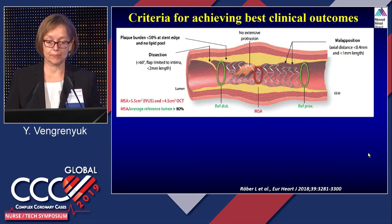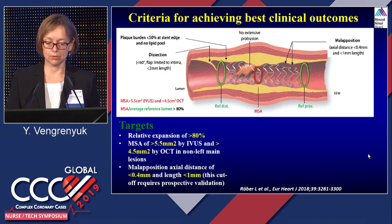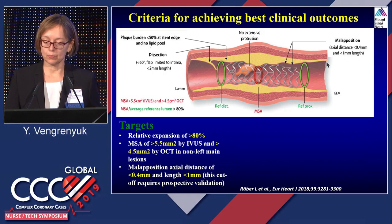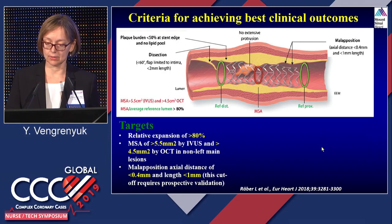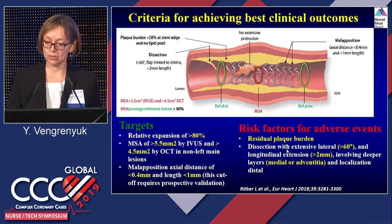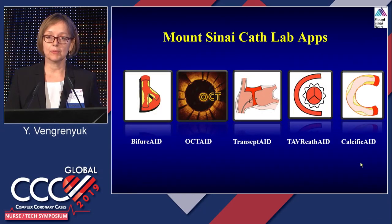What is optimal PCI, regardless of imaging modality used? First, the most important measurement is minimal stent area: more than 5.5 mm² by IVUS, 4.5 mm² by OCT in non-left main lesions. Relative stent expansion should be more than 80%. Malapposition distance should be smaller than 400 microns, less than 1 mm length. Findings to avoid or treat include residual plaque burden and large dissections involving the medial and adventitial layers.